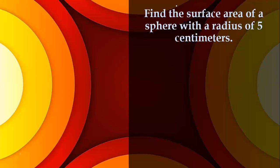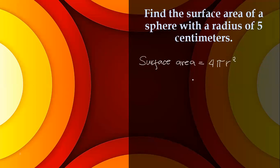Find the surface area of a sphere with a radius of five centimeters. The surface area is equal to four times pi times the radius squared. This is the formula to get the surface area of a sphere.